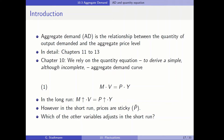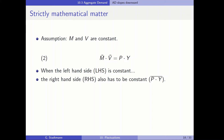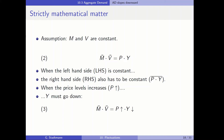Which of the other variables in the quantity equation will adjust in the short run? Let's assume that money supply and velocity are constant, so that the left-hand side of the quantity equation is constant. This implies that the right-hand side must also be constant — so the product P times Y has to be constant. This implies that when price levels increase, the demand for goods Y has to decrease. You can see this in equation three: when the left-hand side is constant and the price level increases, then Y has to decrease.